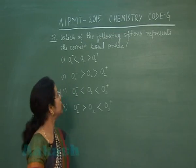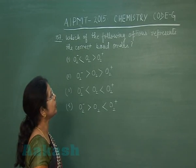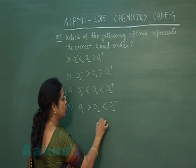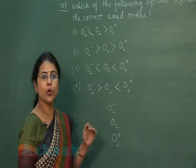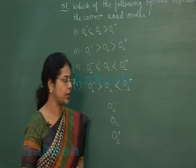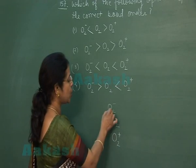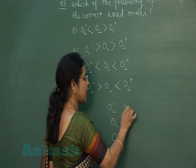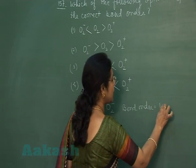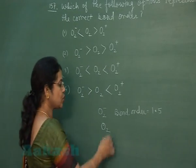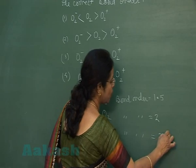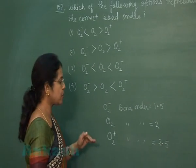Question number 157: Which of the following options represents the correct bond order? The molecular species given are O₂⁻, O₂, and O₂⁺. To calculate bond order, we use the molecular orbital diagram. O₂⁻ (superoxide ion) has a bond order of 1.5; O₂ has a bond order of 2; and O₂⁺ has a bond order of 2.5.